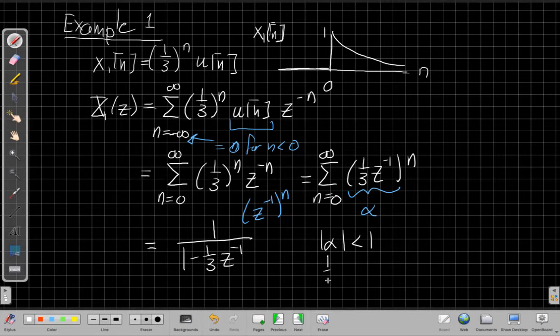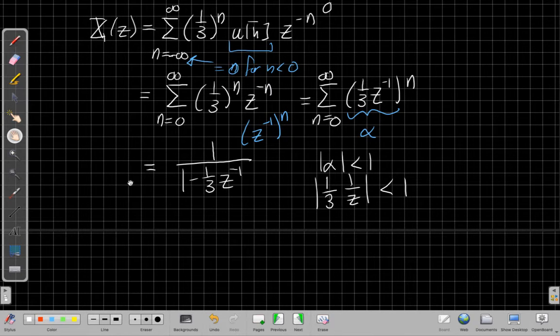Now I shouldn't say when, because that implies time. What values of Z does this sum converge for? So I've got 1/3 times Z⁻¹. Well, that's 1/Z. I need the magnitude of this to be less than one. I can multiply both sides of this equation.